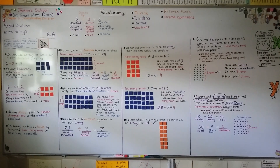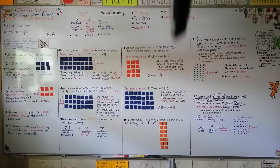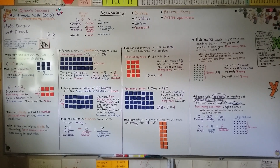You can use arrays to model and solve division problems. Remember, the divisor can actually represent the rows or the columns — it can represent how many rows you make or how many are in each row, as we saw when we changed the array around for 14 divided by 2. I hope you have a really nice day, and I'll see you for the next lesson.